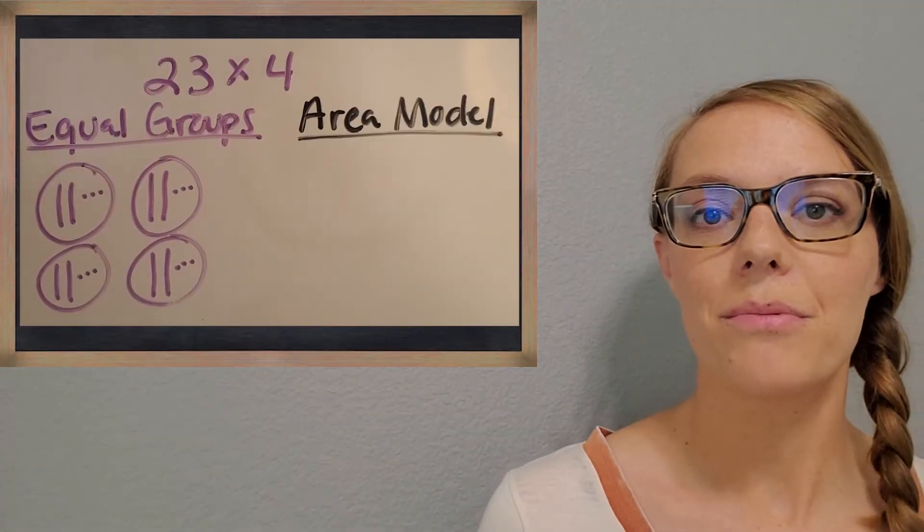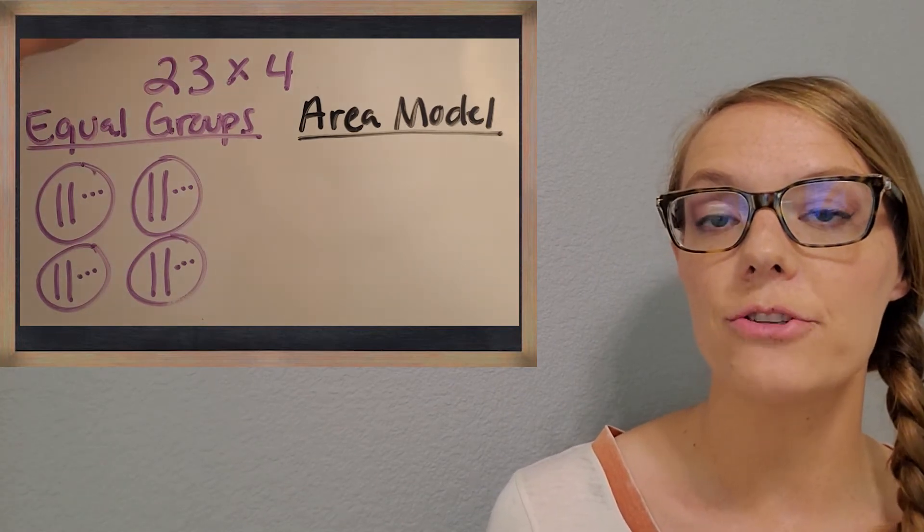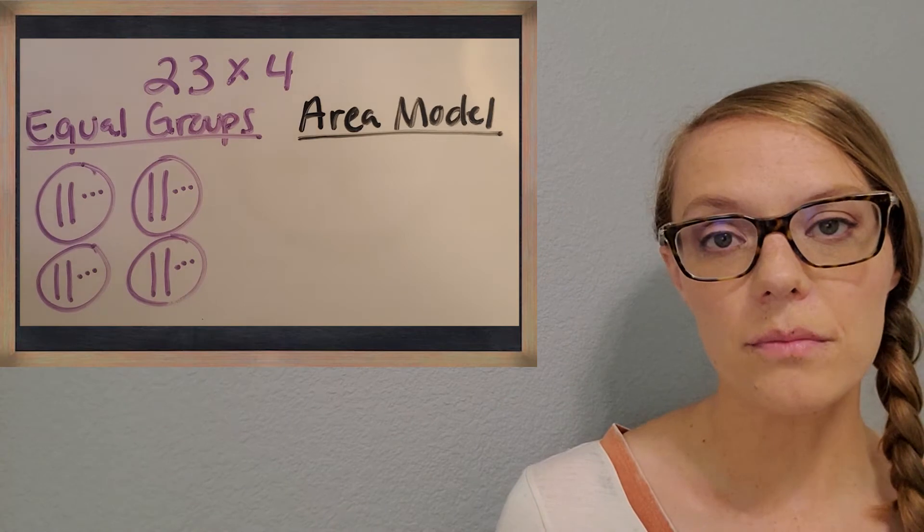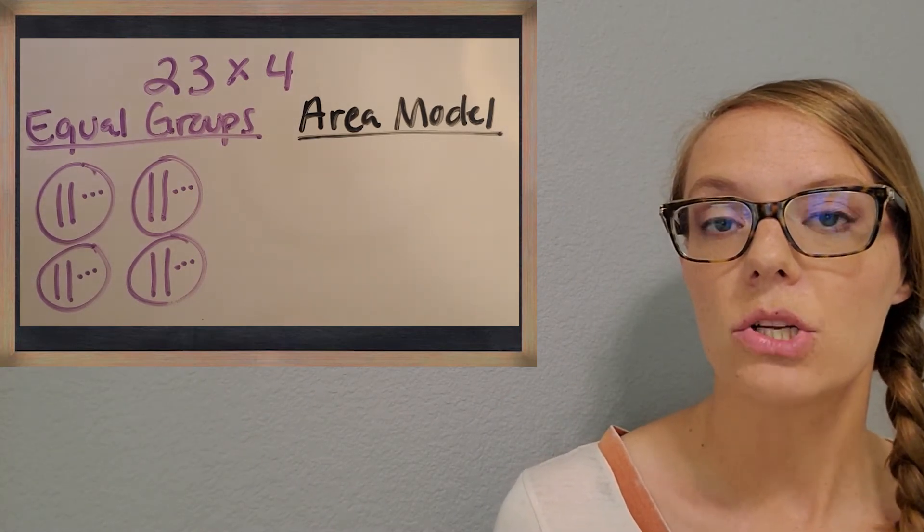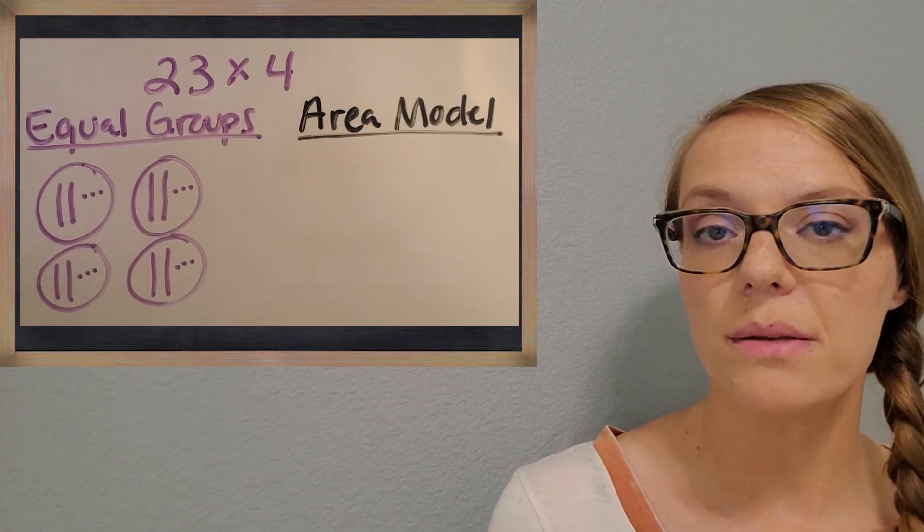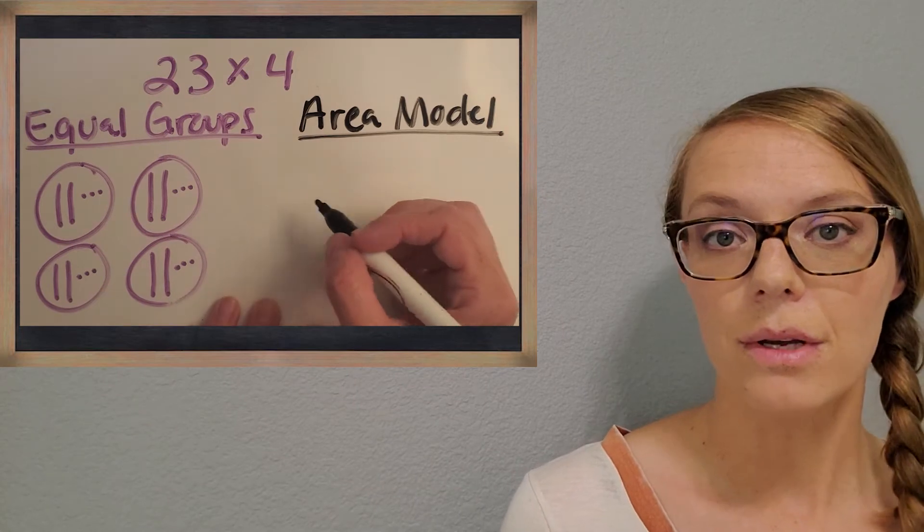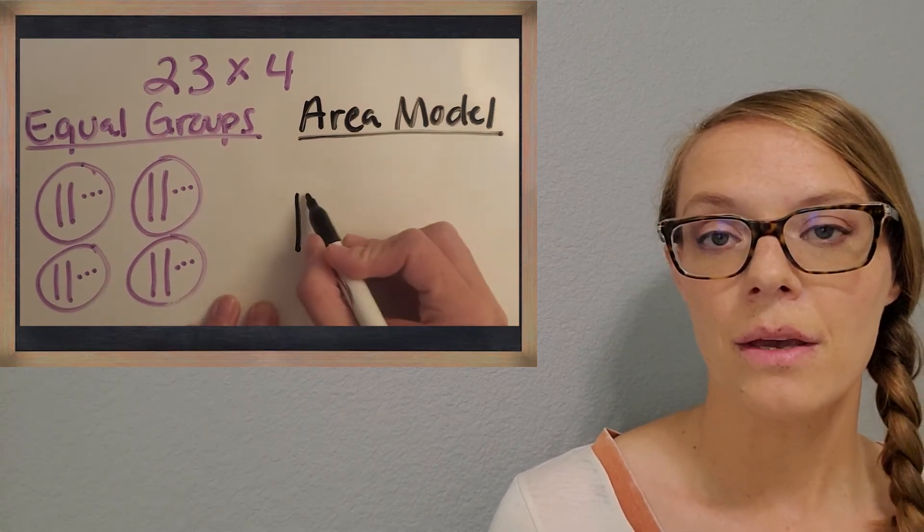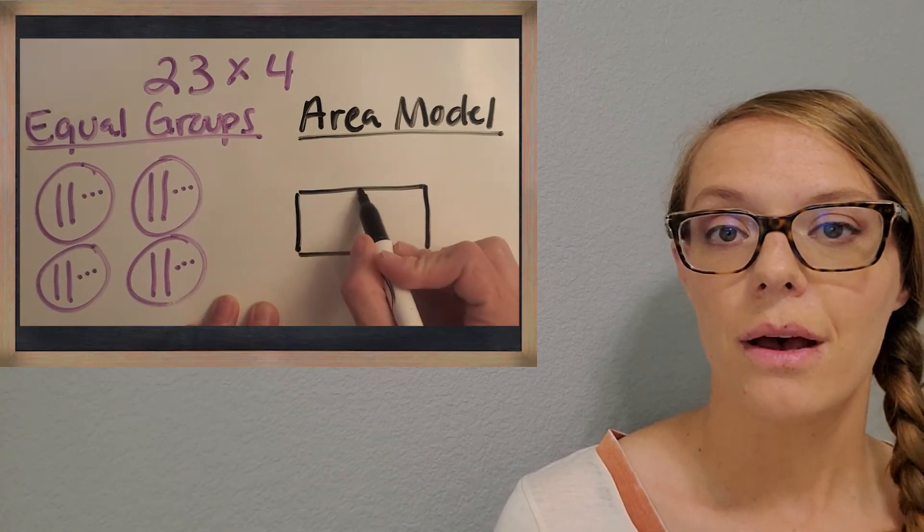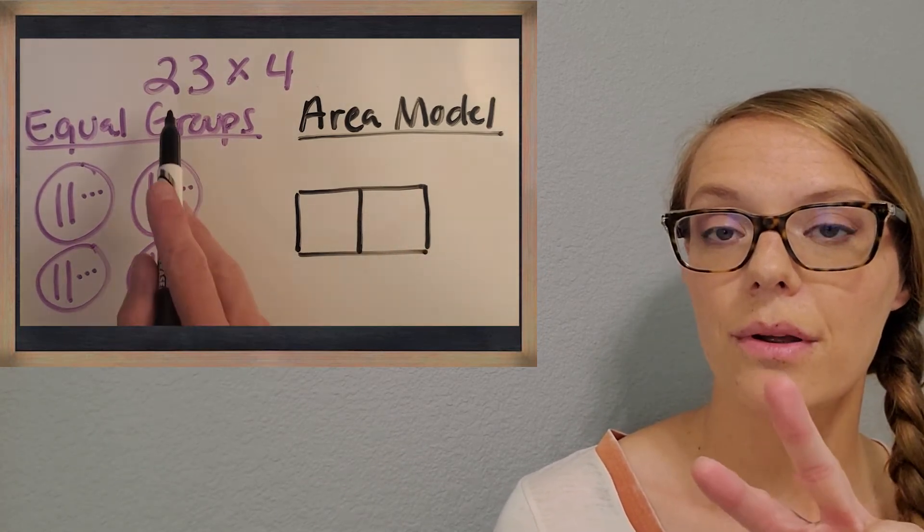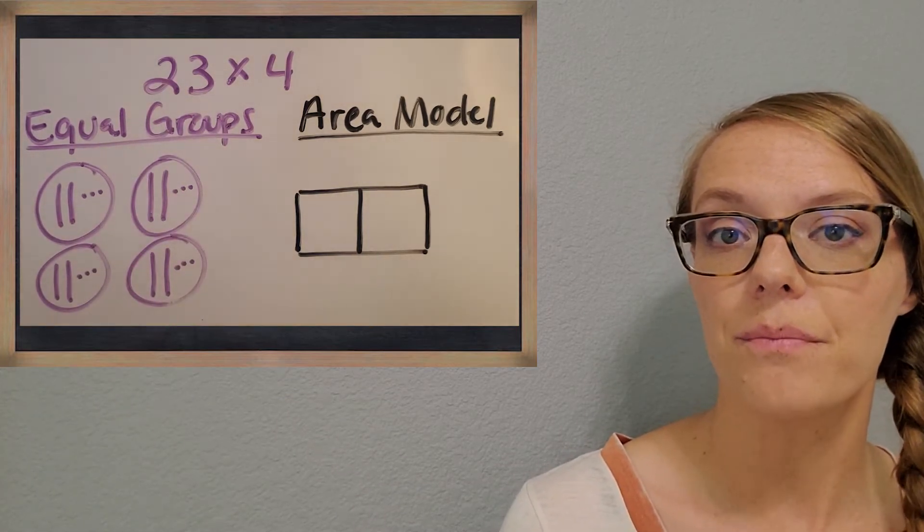Then I thought it would be really good to see side by side another strategy that goes with multiplication. We can see how it is related to drawing equal groups. So we're going to try something called the area model. We draw a rectangle, so you can draw one just like me. Then I'm going to split it in half because one of my numbers is a two-digit number. So we're going to make two parts for that number.